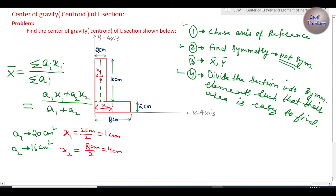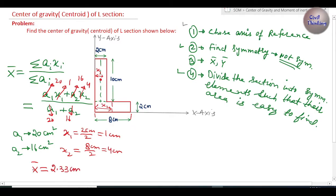Now we have all values: A1 = 20, x1 = 1 cm, A2 = 16, x2 = 4 cm. Substituting into the formula and solving, we get x̄ = 2.33 cm. So we have found the x component of the center of gravity.